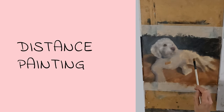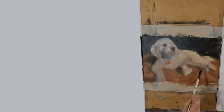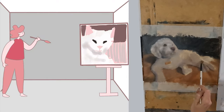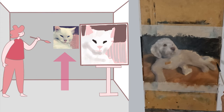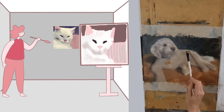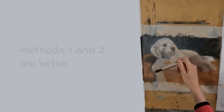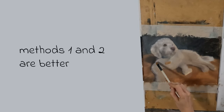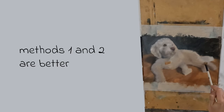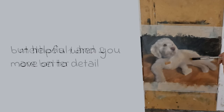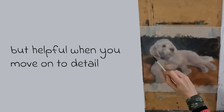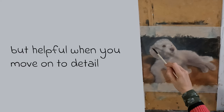Number three: place your photo at a distance. If you are struggling with numbers one and two, you could try placing your photo at least two metres away from your workstation. You just won't be able to see the small details to paint them. But this method will not give as good a result as methods one or two, though it is helpful when you have moved on to paint the colour in more detail.